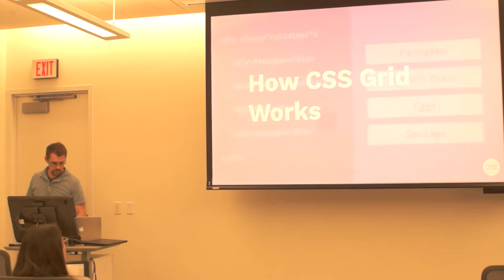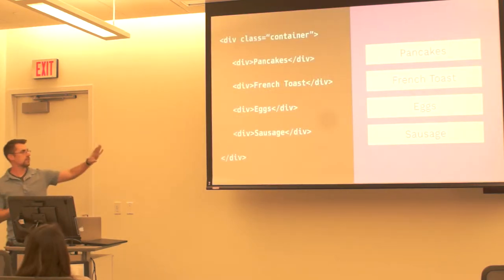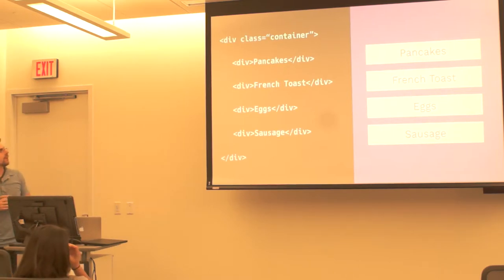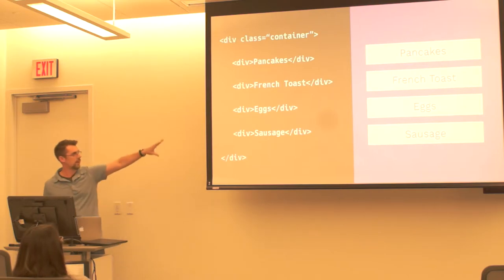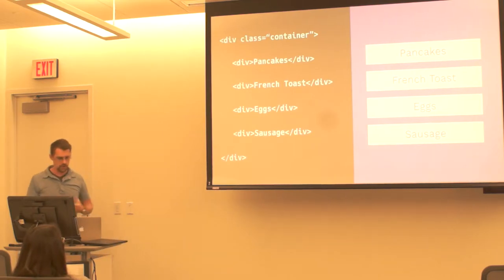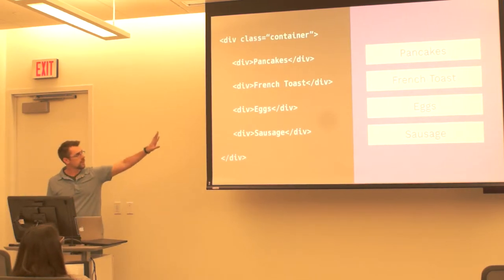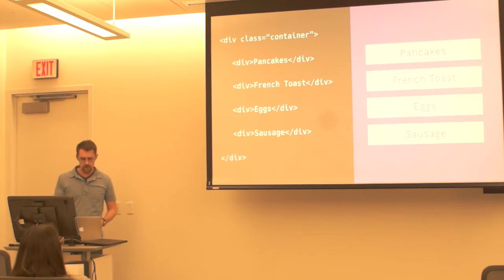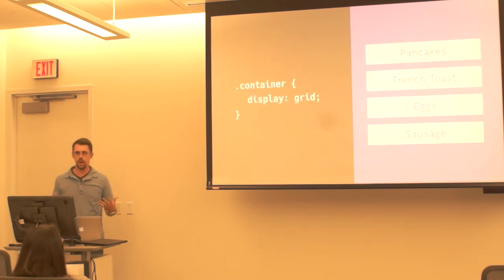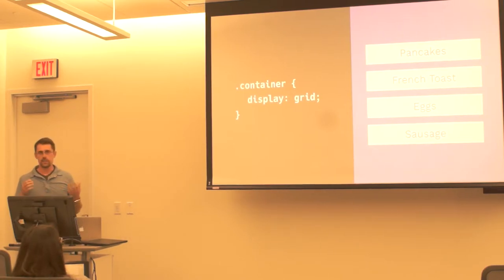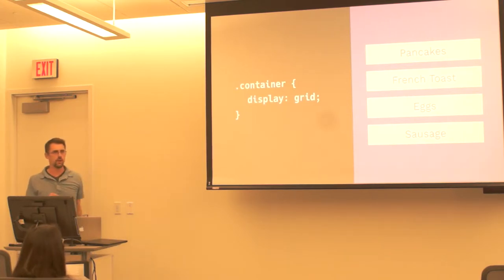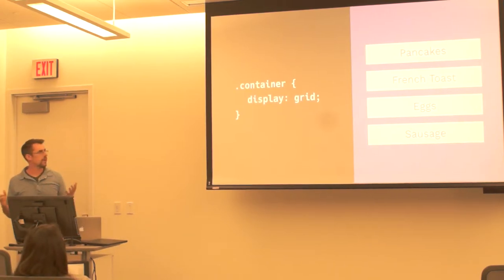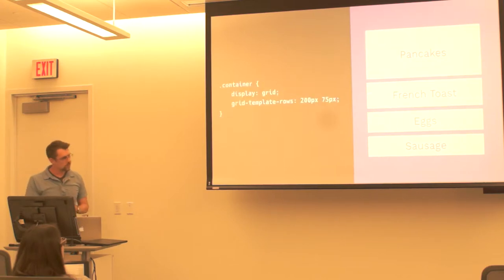So how CSS Grid works. I have some samples here - these are some of my favorite foods you can prepare on a griddle. So if you imagine you have a container and you just have some elements within there - pancakes, french toast, eggs and sausage. If you go then and on your container you drop in the display:grid property, these are now displaying as a grid. It doesn't really do anything visually, which is okay - it is working. They are displaying as a grid, but by default each element has its own row, and by default those rows fill the parent container. So visually we're not doing anything right now until we take the next step.